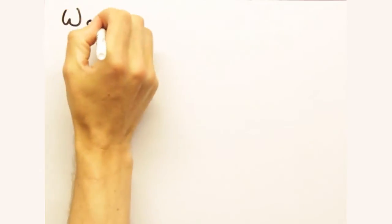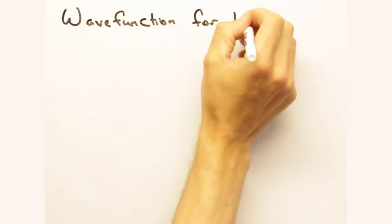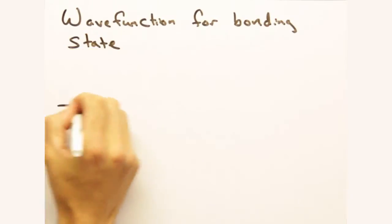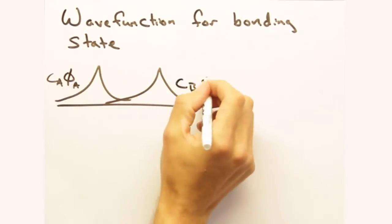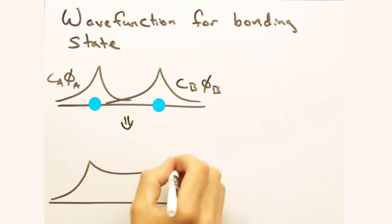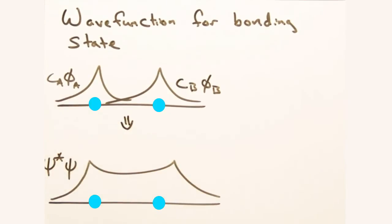To drive the point further, let's plot our wave function and electron density for both cases. Let's start with bonding. So on the top, we have a wave function like so, and on the bottom, we have psi star psi, which gives us an electron density that looks like this.